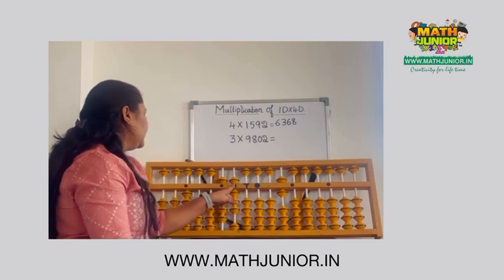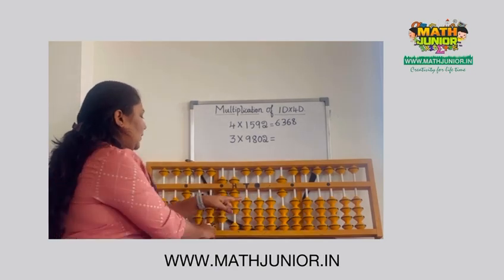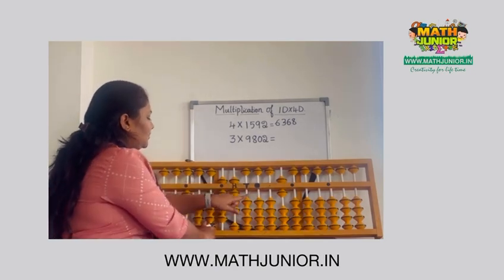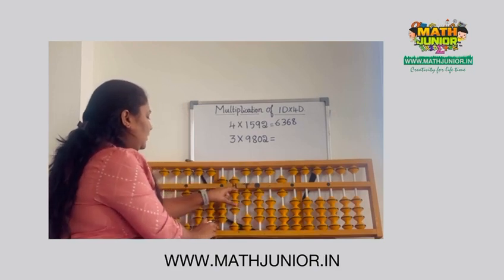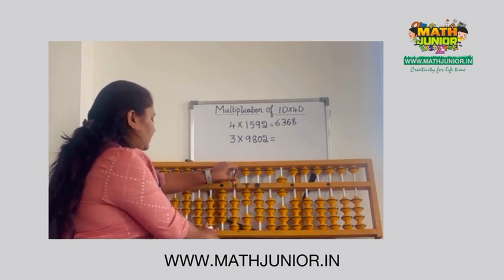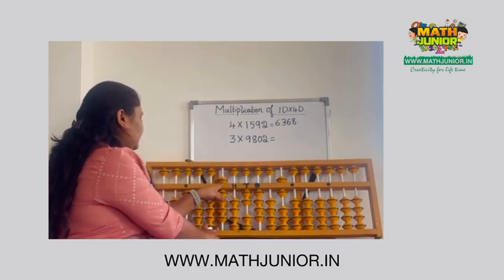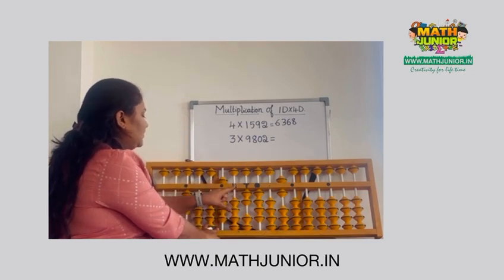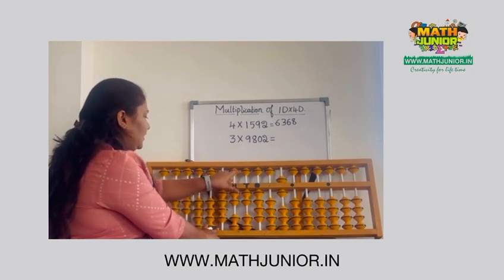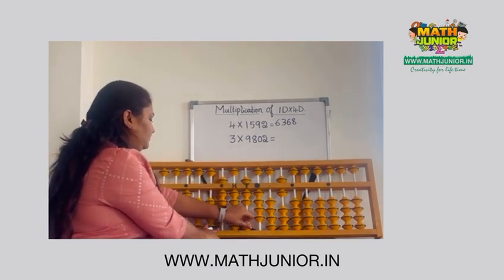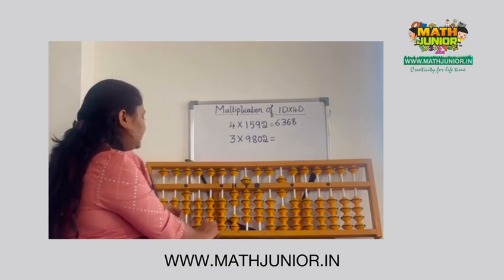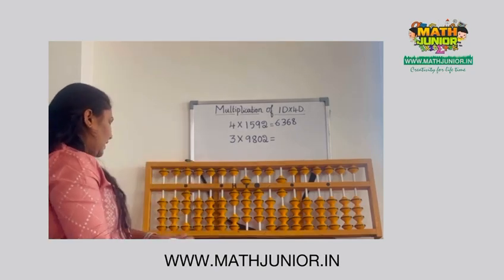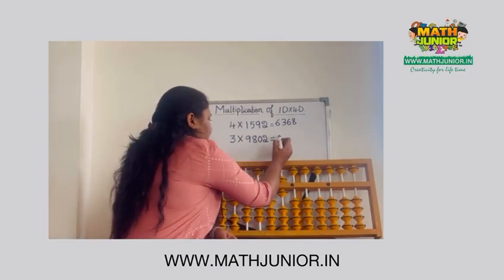Next is 8 times 3 is 24. After 8, place 20 and 4. Then remove 8. Next is 9 times 3 is 27. After 9, place 20 and 7. Then remove 9. So our final answer is 29,406.